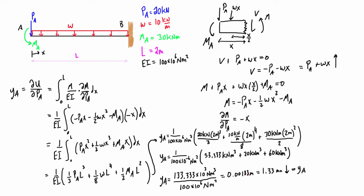So there you go guys, that is an example on using Castigliano's theorem to find the deflection where we have a point load acting at that point.